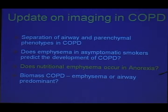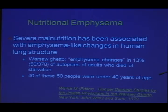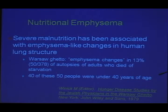Next, I'll tell you about studies we did to look at whether women with anorexia develop emphysema. There is some evidence that severe malnutrition is associated with emphysema-like changes in the human lung. This was first reported during the war in the Warsaw ghetto, where 378 autopsies of adults who died of starvation were performed. Of those 378, 50 had significant emphysema — 13% — and 40 of those 50 were under the age of 40, where you wouldn't expect significant emphysema.